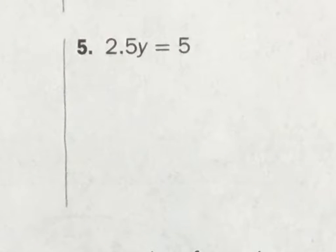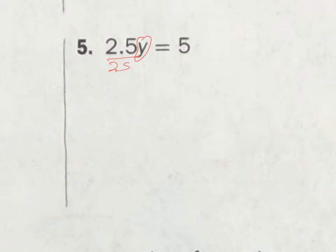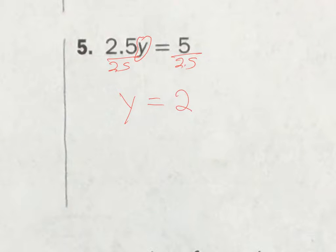Number 5. I'm going through these pretty quickly, because if you get the system, then you should know what to do. It's 2.5 times y, so I'm going to divide it by 2.5, and divide this by 2.5 as well. That leaves me with y equals 2. So now if I put 2 in here times 2.5 — 2.5 times 2 equals 5. And it checks out.